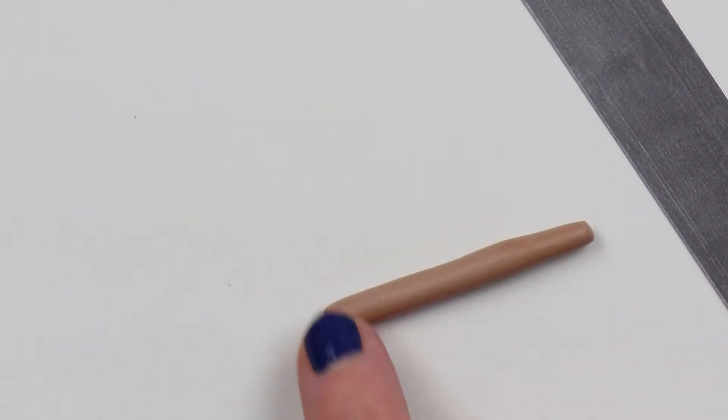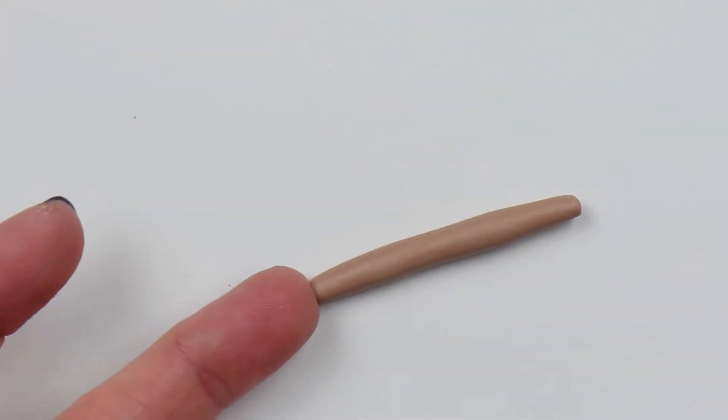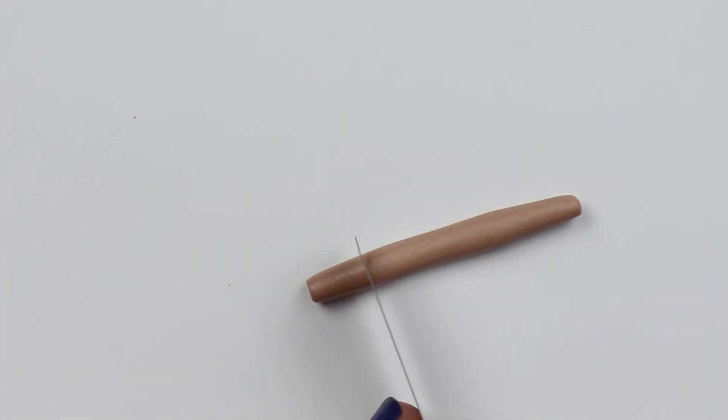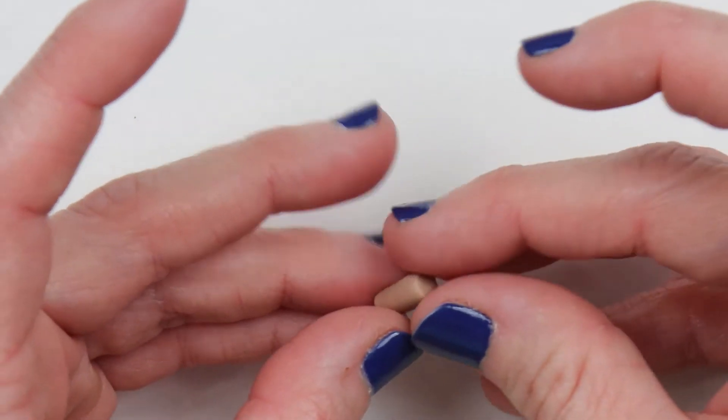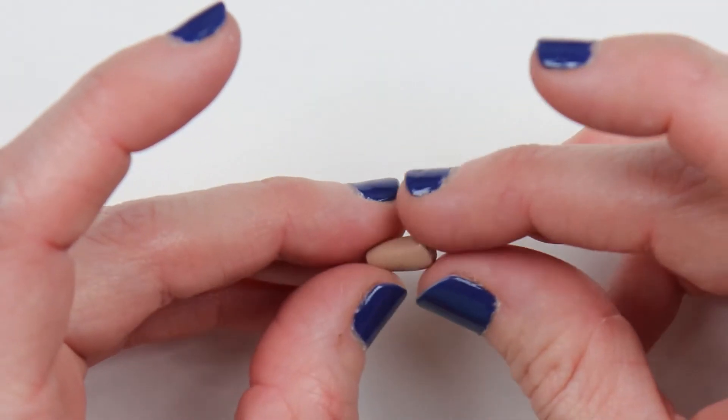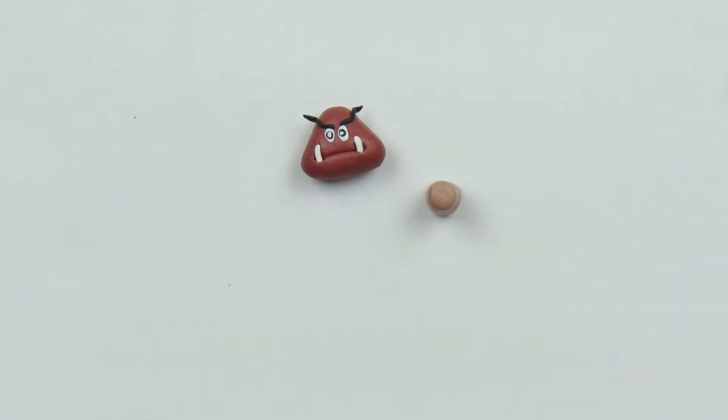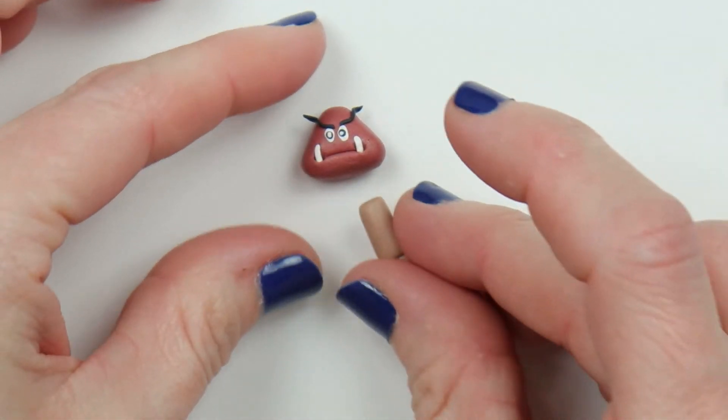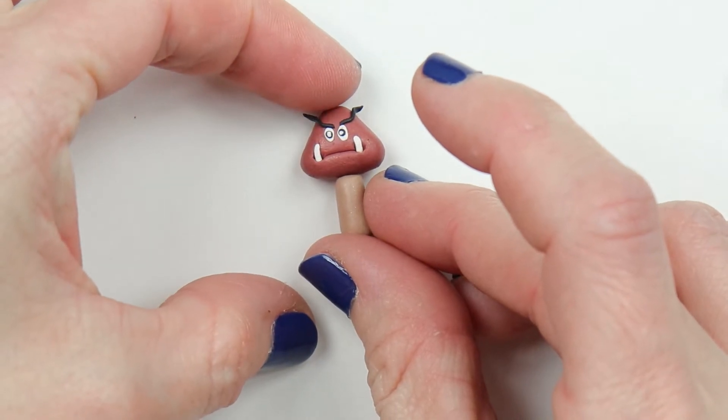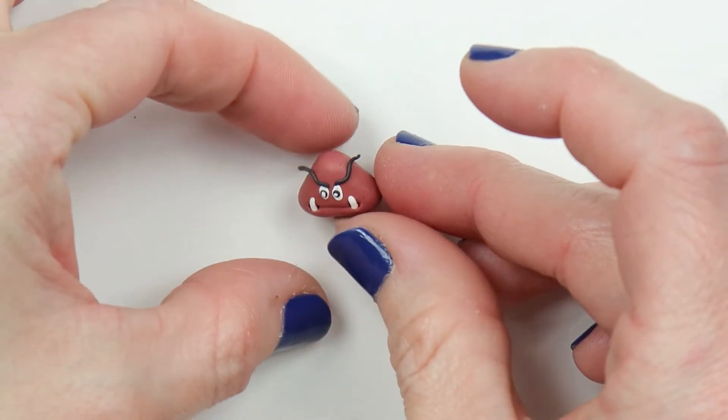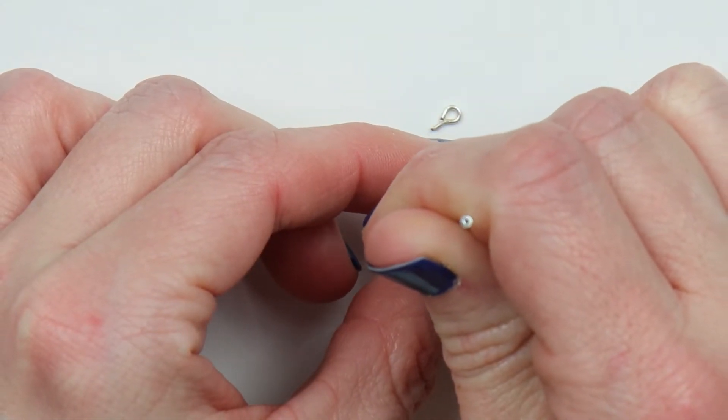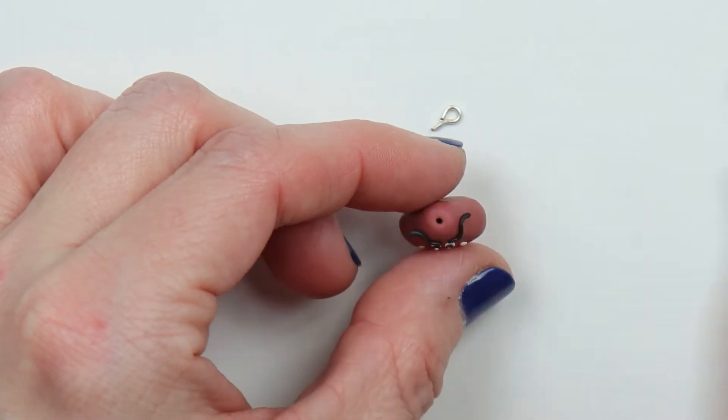Roll out some tan colored clay, and then slightly taper one end. I want one end to be slightly thicker than the other. And then I'm just going to smooth out the seams from where I cut it to make sure it's nice and smooth. Place the slightly thinner side against the base of the goomba head. Once it's attached, pre-poke your eye hook hole, and add in your eye hook.